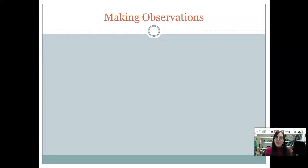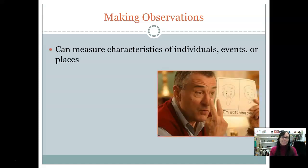Another way that we can operationalize our variables is through making observations. Anytime we're making observations, we're measuring characteristics of something based on some way that we are observing those things. We can measure characteristics about specific individuals, we can measure characteristics about events or places, but it's anything that we can observe either with our eyes or really any sense. If we want to observe sound, you can do that too, or smells. But the most common is just you observe, you watch to see what happens, and you take note of whatever's happening.